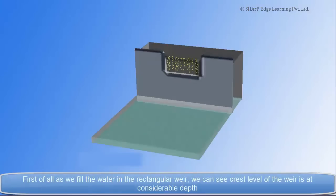First of all, as we fill the water in the rectangular weir, we can see crest level of the weir is at considerable depth.